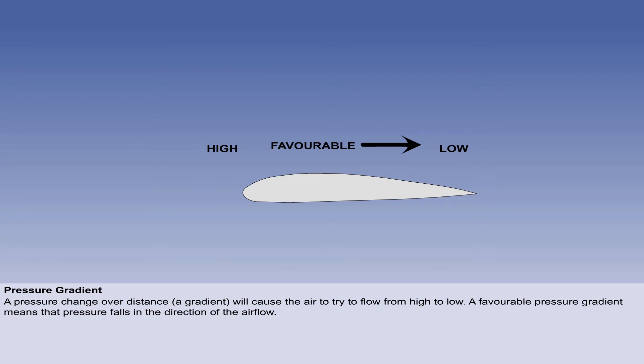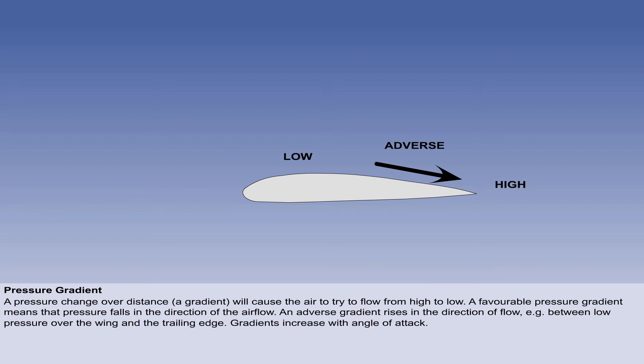The contribution to the rearward's force is due to the pressure gradient, which is a change in pressure over distance. The greater the pressure difference, the steeper the gradient. As air tries to flow from high to low pressure, a favourable gradient is one in which the pressure is falling in the direction of the air flow. An adverse gradient is one in which it is rising in the flow direction, such as between the point of minimum pressure over the aerofoil and the trailing edge. The gradient increases with angle of attack.